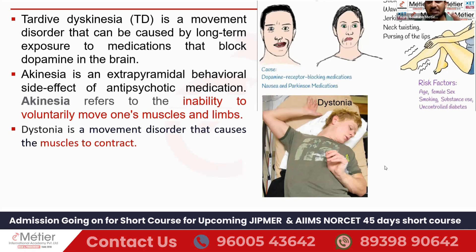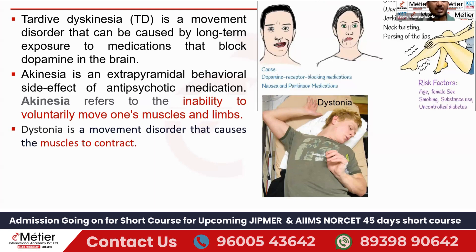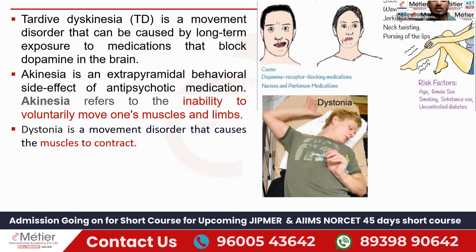The last one is dystonia — it is also a movement disorder. Dopamine is responsible for movement, and here movement is blocked because dopamine is blocked by the antipsychotic drugs. Dystonia is a movement disorder that causes the muscle to contract abnormally — you can see the abnormal contraction in the body. All these things — tardive dyskinesia, akinesia, dystonia, and pseudo-Parkinsonism — are extrapyramidal symptoms commonly seen in patients who have been taking antipsychotic medications long-term.